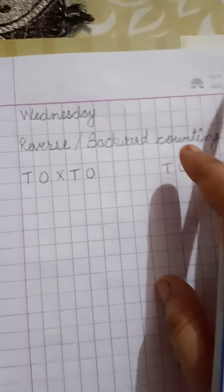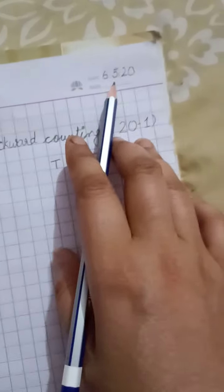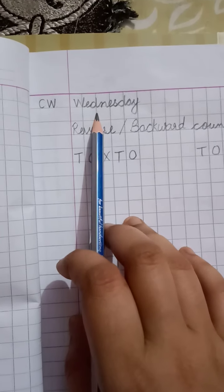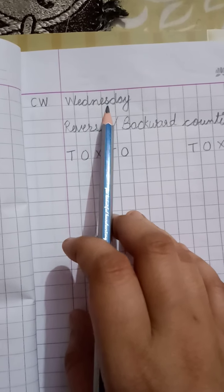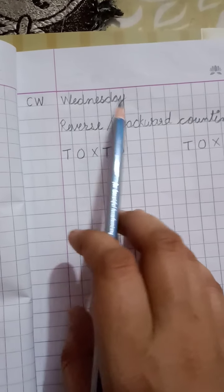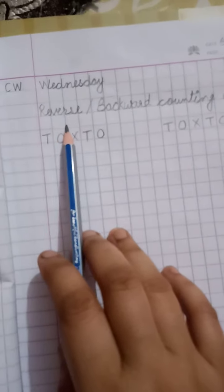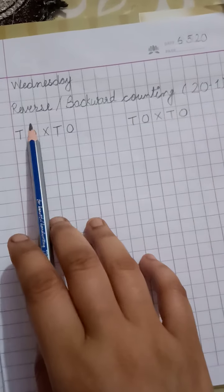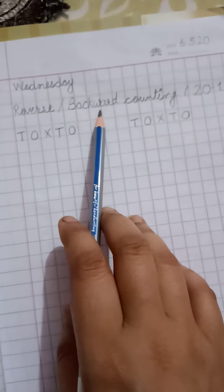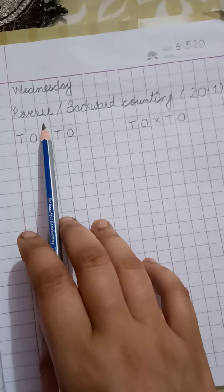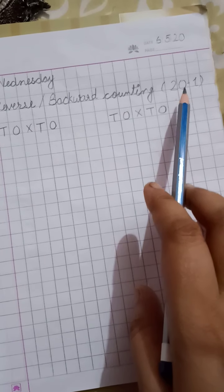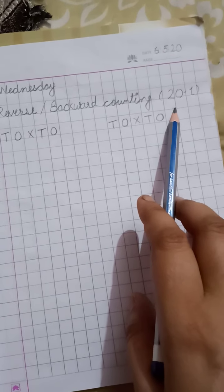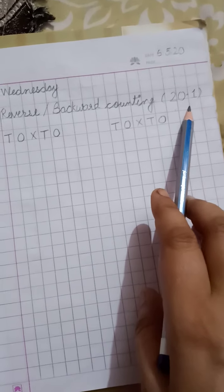Today's date 6-5-20. CW then today's day Wednesday. W-E-D-N-E-S-D-A-Y Wednesday. Reverse counting or backward counting. हम इसे कुछ भी लिख सकते हैं. Backward counting भी बोल सकते हैं और reverse counting भी बोल सकते हैं. Previous class में हमने 10 to 1 learn की थी और आज हम 20 to 1 learn करेंगे.